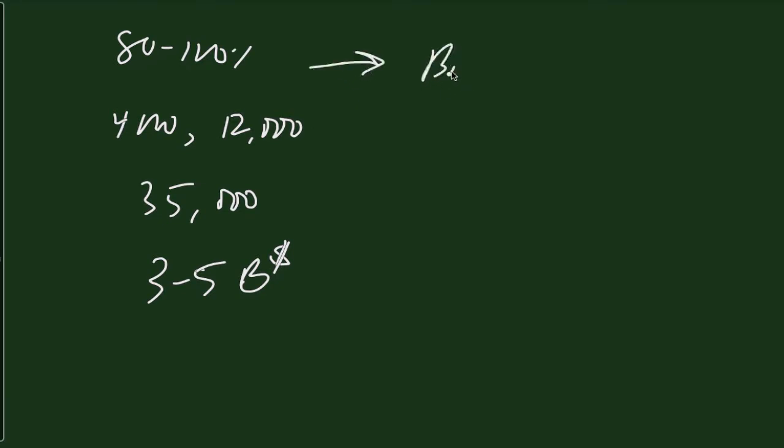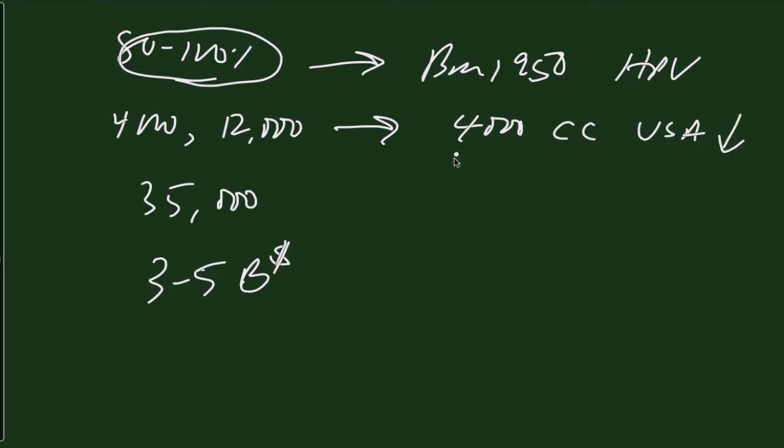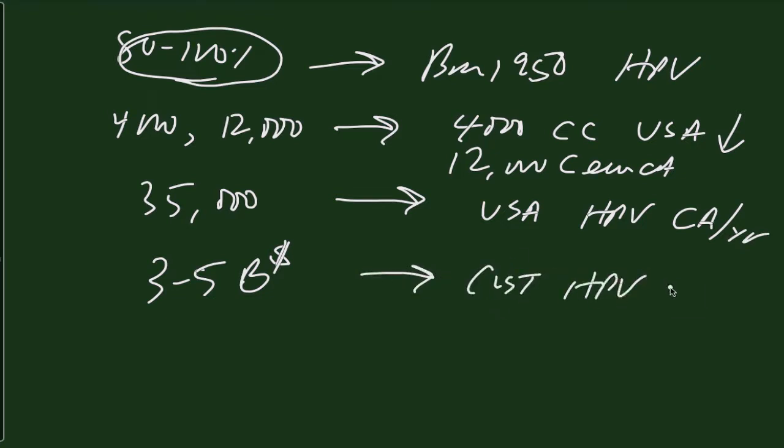If you're born after 1950, this is your chance of having been exposed to HPV. There are 4,000 cervix cancer deaths in the United States per year. There are 12,000 cases of cervix cancer. 35,000 USA all types HPV related cancers per year. 3 to 5 billion the cost of HPV related illnesses in the USA per year.